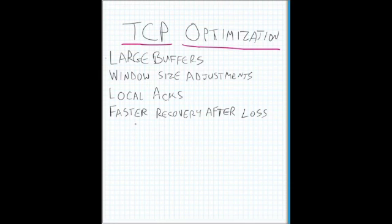But so traditional WAN out vendors is TCP, with the exception of companies like Silver Peak. Some of the benefits that you're getting from WAN out from a TCP perspective is you're getting larger buffers, window size adjustments, local acknowledgements, faster recovery after loss.